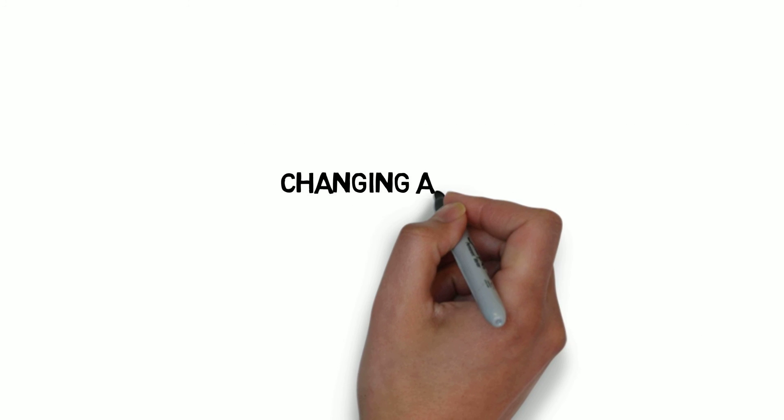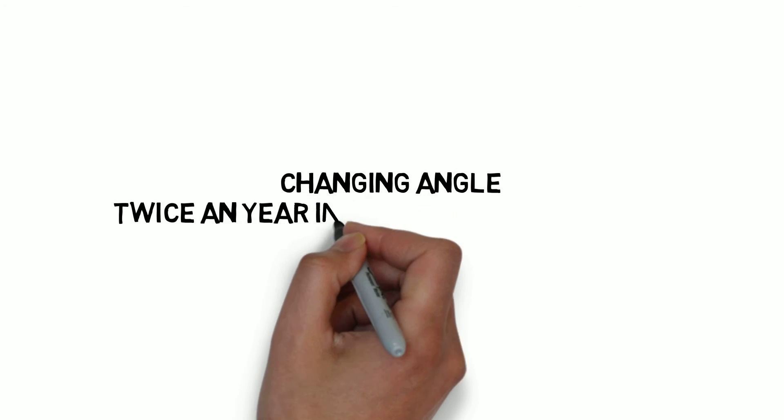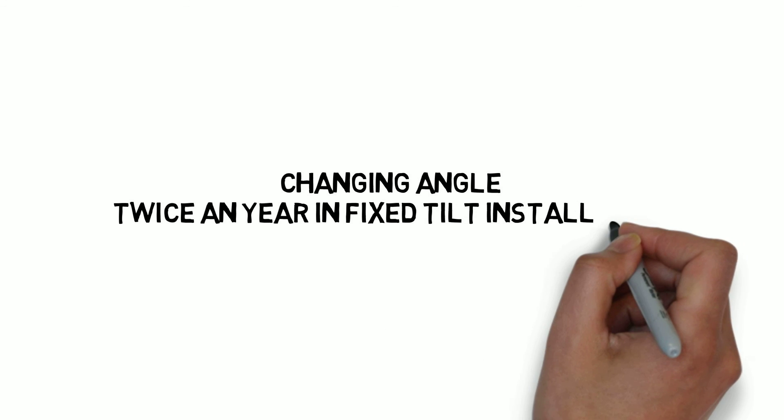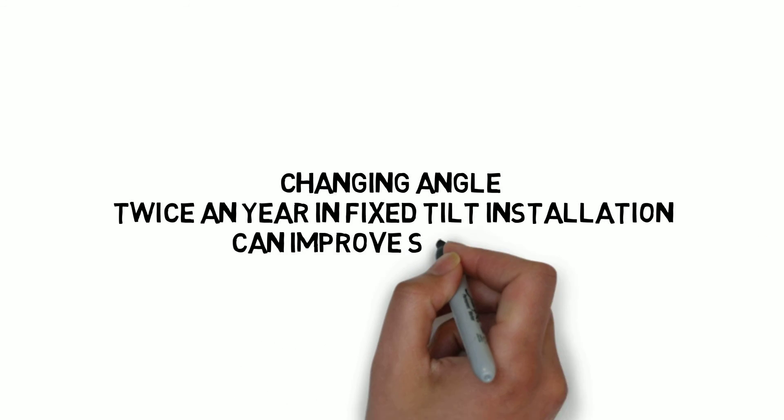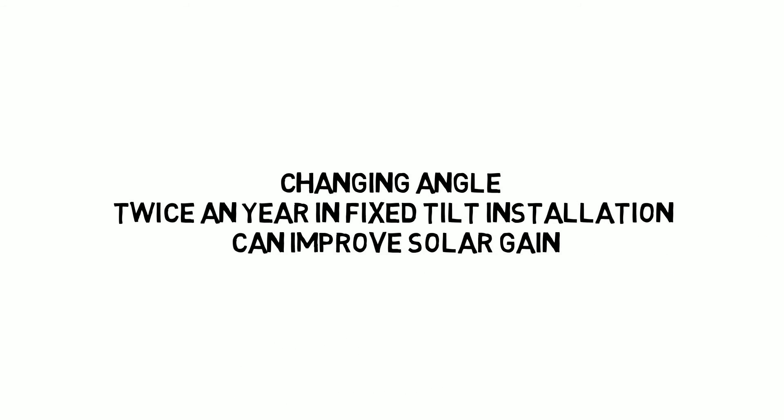There is another way through which solar gain can be increased, and this can be done by changing the angle twice. And this angle is changed at the point when seasons are changing, that is, during spring and autumn equinox.